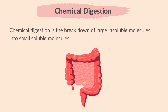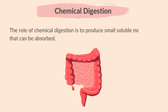Chemical digestion is the breakdown of large insoluble molecules into small soluble molecules. The role of chemical digestion is to produce small soluble molecules that can be absorbed.